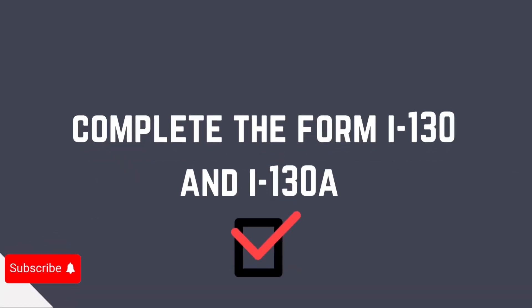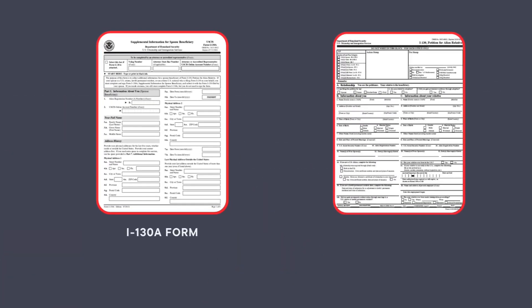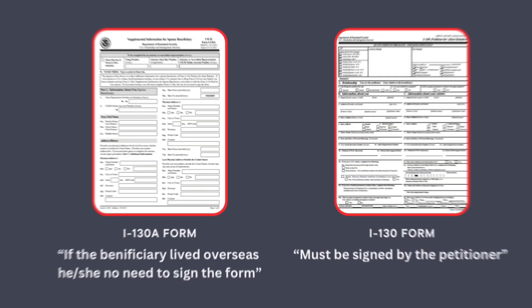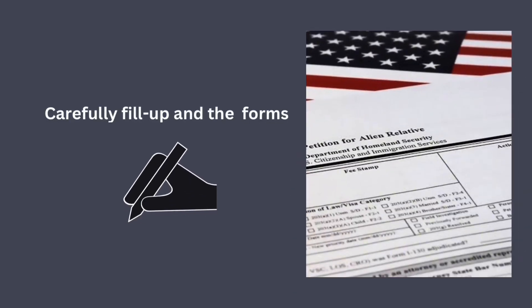Checklist number two: complete Form I-130 and I-130A. If the beneficiary lives overseas, he or she does not need to sign Form I-130A. Carefully fill out the form with accurate information about yourself and the beneficiary. USCIS provides a detailed guide and instructions for you.